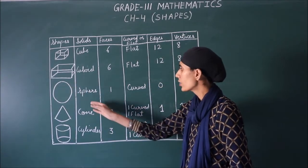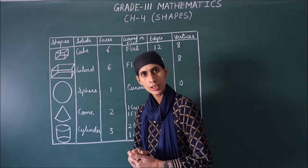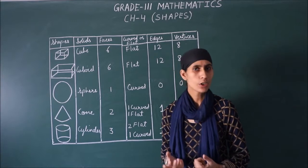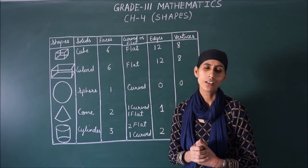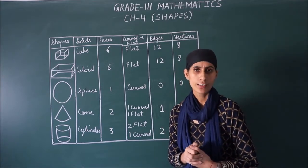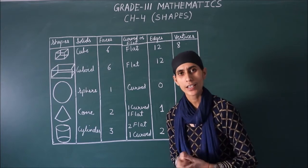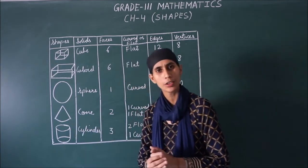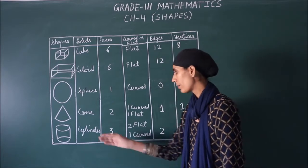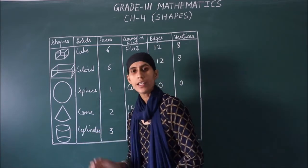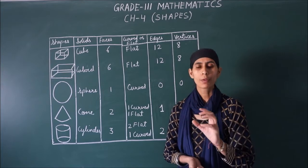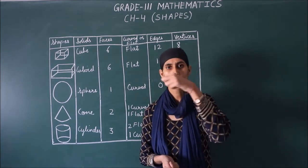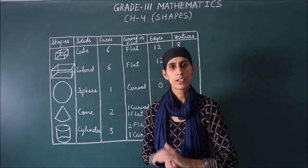Next, we have a sphere. After that, we have a cone. Cone is one of the favorite things that you eat. In the summer season, what do you eat? Ice cream. In the cone, it is the same shape. Next, we have a cylinder. In the cylinder shape, you can see what you have in your water bottle. It is also in the cylinder shape. It is round. It is flat.